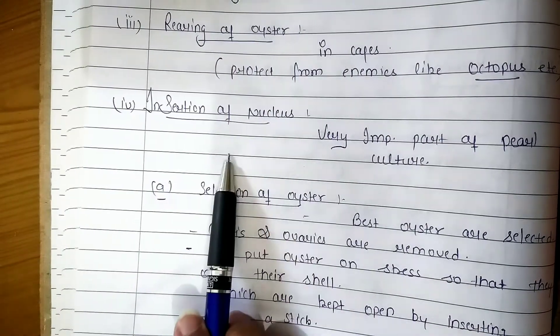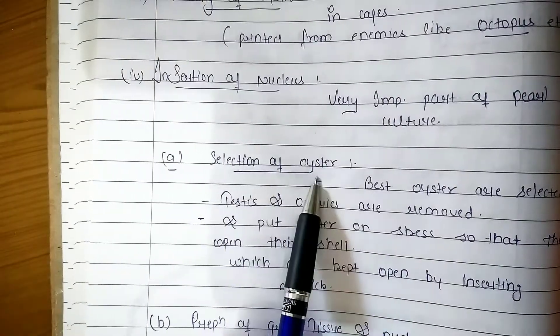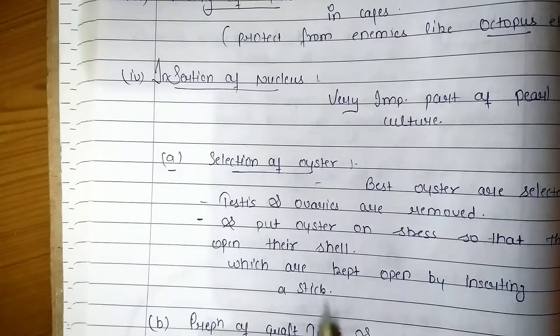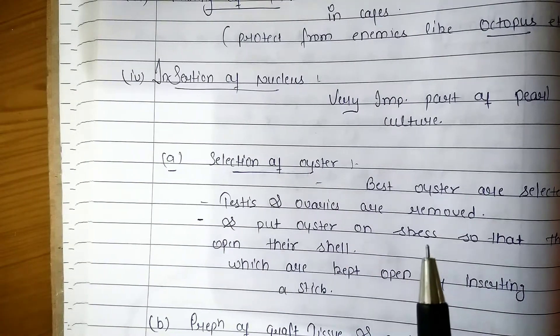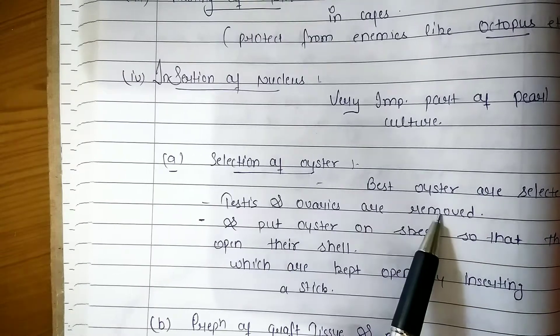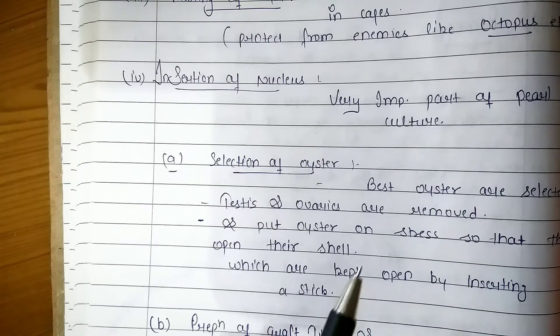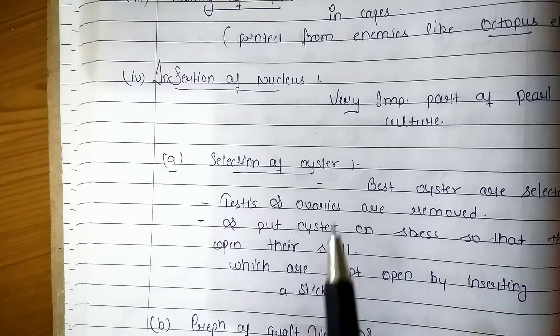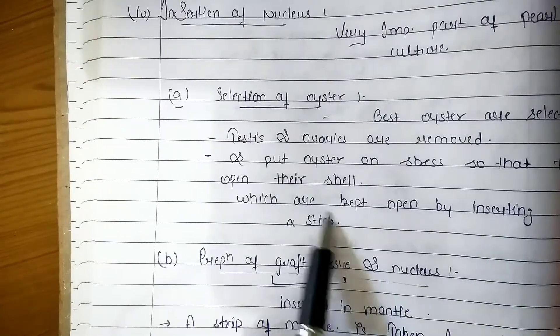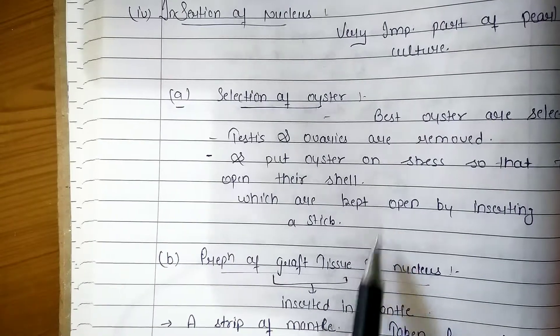First of all, what do we need to do? We need a healthy oyster. We need to remove the testes or ovaries. Then we do stress. We need to open the shell. When the shell is open, we put a stick in it so that the shell stays open.